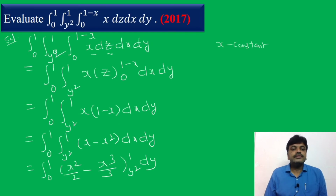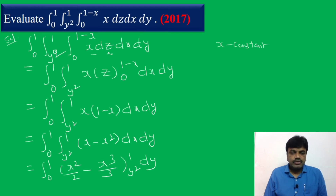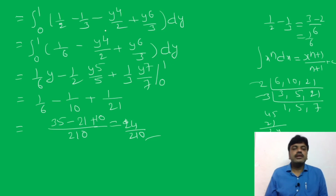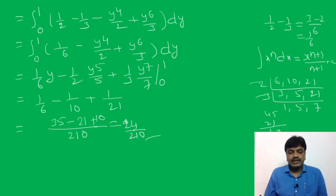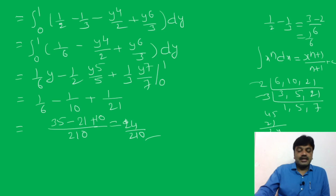Once again: the limits are in terms of x and then y, so the proper order is dz, dx, and dy. Whenever you integrate with respect to z, x and y are constants. Here x is constant, so you get z — substitute upper and lower limits. Then integrate with respect to x, substitute limits, and get a function in terms of y. Simply integrate with respect to y and substitute limits to get the value of the given integration.